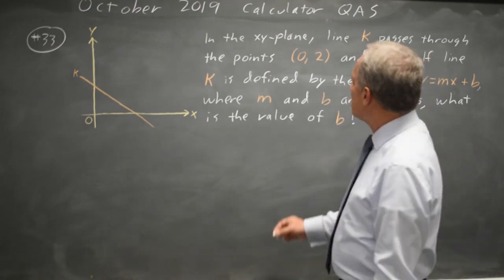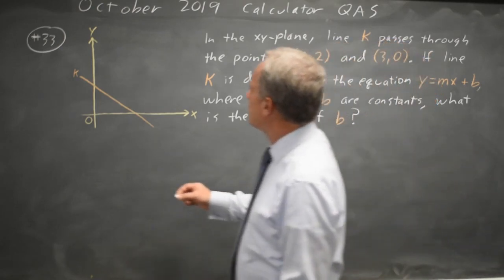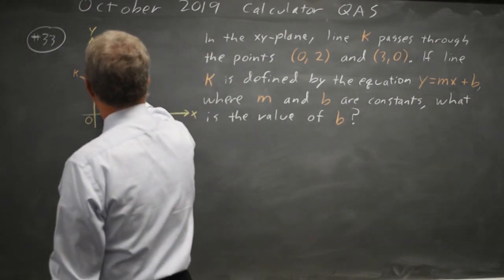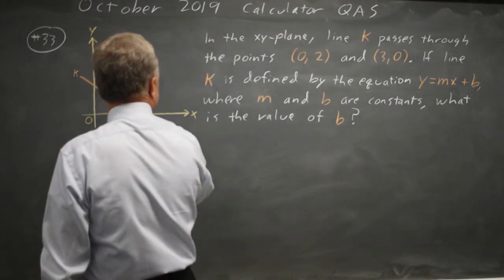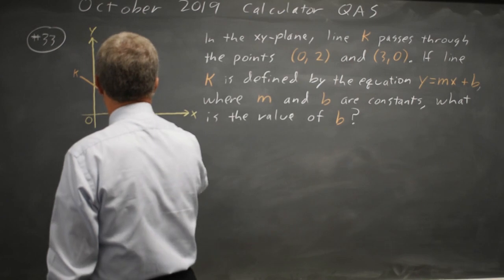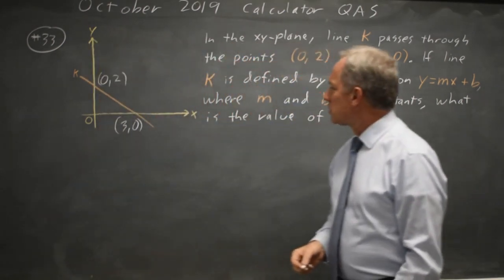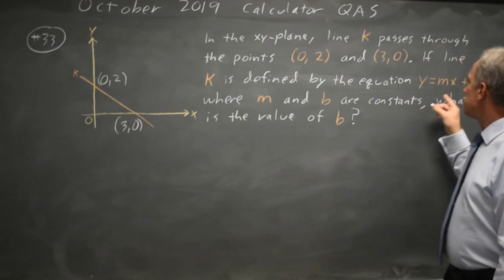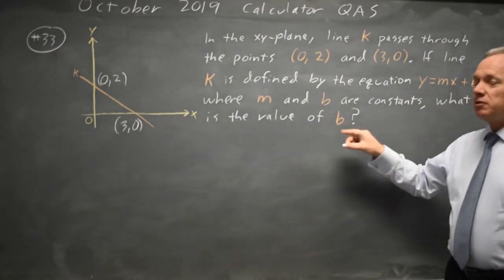This is question 33. College Board gives us a line passing through the points (0, 2) and (3, 0), and they're asking for the equation y equals mx plus b, the value of b.